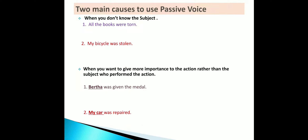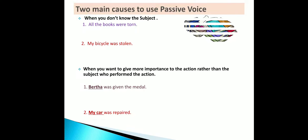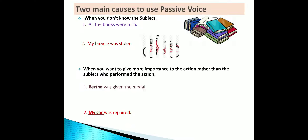Why do we use passive voice? There are two main reasons. The first is when you do not know the subject or the doer. For example, 'All the books were torn' — we do not know who tore the books. Second example: 'My bicycle was stolen' — I do not know who stole my bicycle. So here, the subject is unknown.